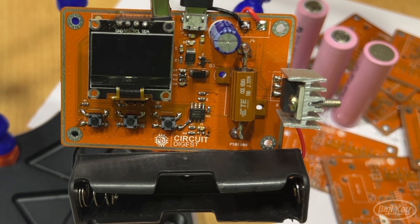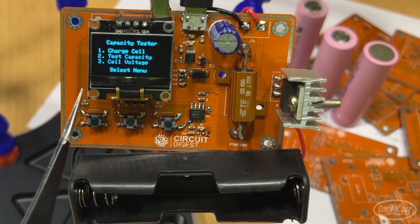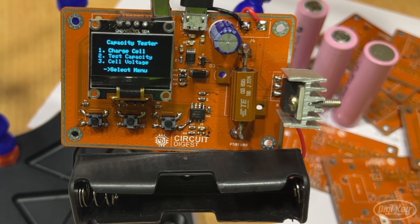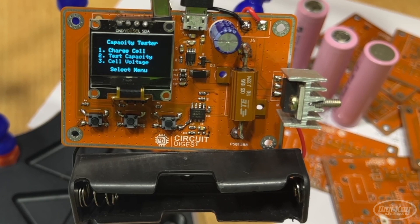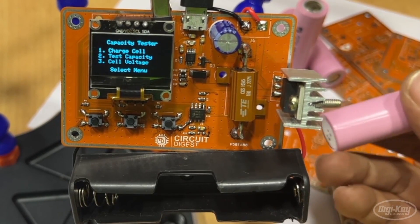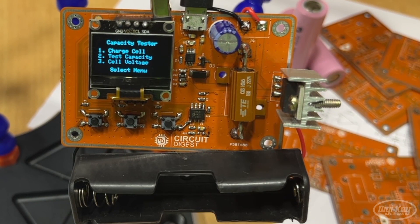Now the board here is ready, let me just turn it on. As you can see it says our capacity cell tester and then it gives three options for us: one is to charge the cell, second is to test the capacity, and the third is to check the cell voltage. Before we do any of that let me take a 18650 cell and we can insert it into the slot over here and we can begin testing the cell.